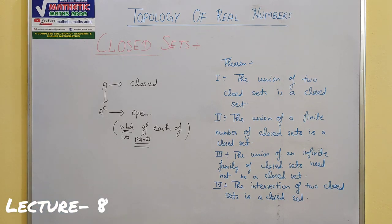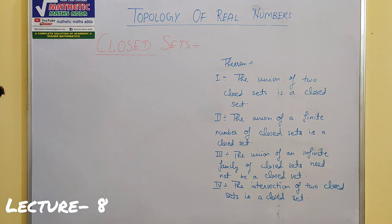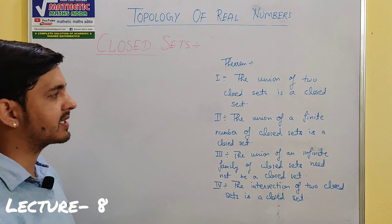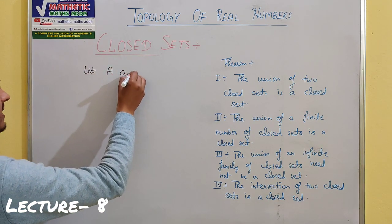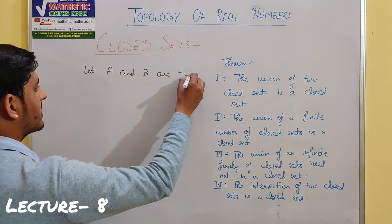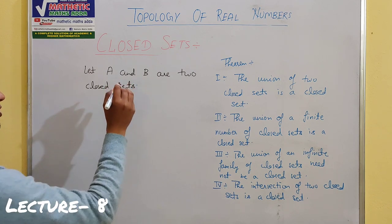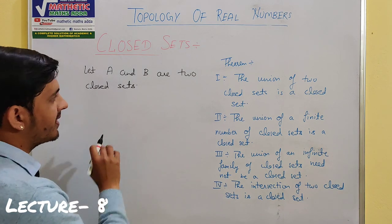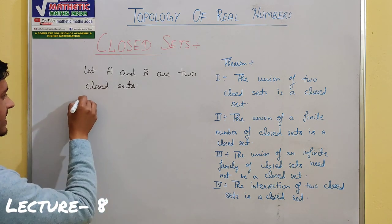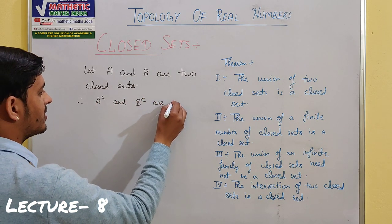Keeping these points in mind, let us now prove the theorems today. The first theorem is: the union of two closed sets is a closed set. To prove this, let A and B be two closed sets. If any set is closed, it means its complement is open. So A complement and B complement are open sets.